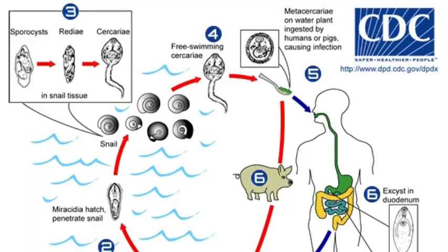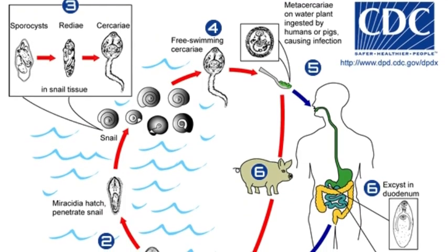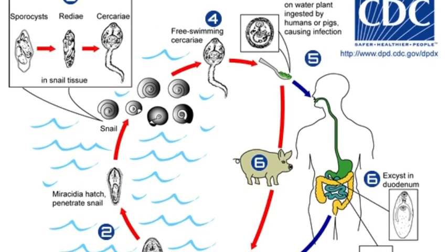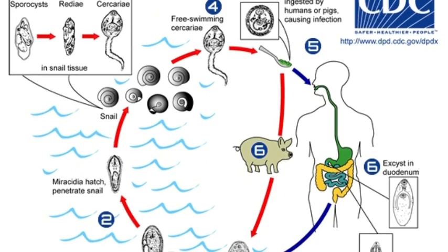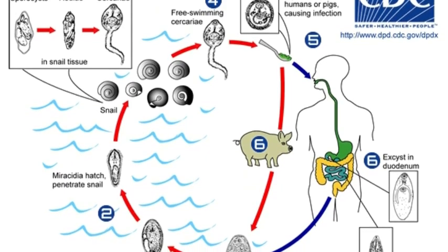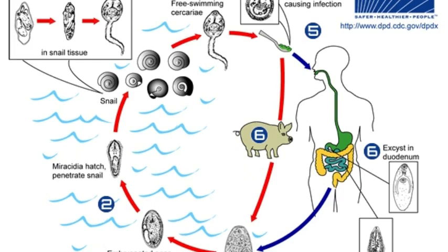Stage 5: Meta Cercaria. Two-walled cyst. The outer wall is very sticky, but as you eat the plant it is stuck to, the least pressure will break it, leaving the cyst in the mouth.